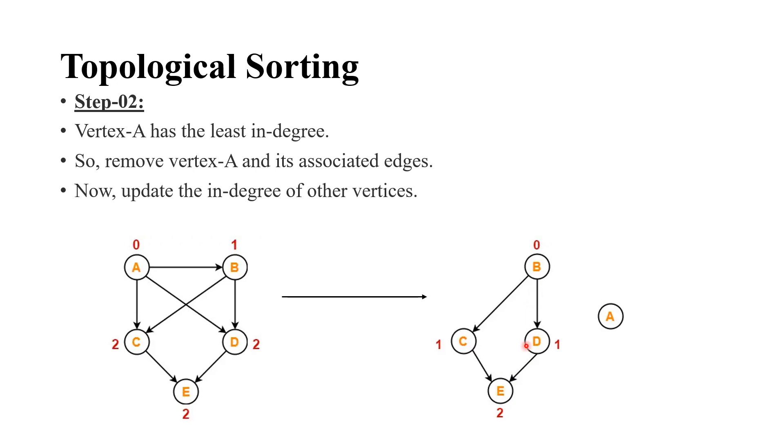So, for B, it is 0 and for D and C, it is one incoming edge and for E, it is 2. We have to repeat this step.